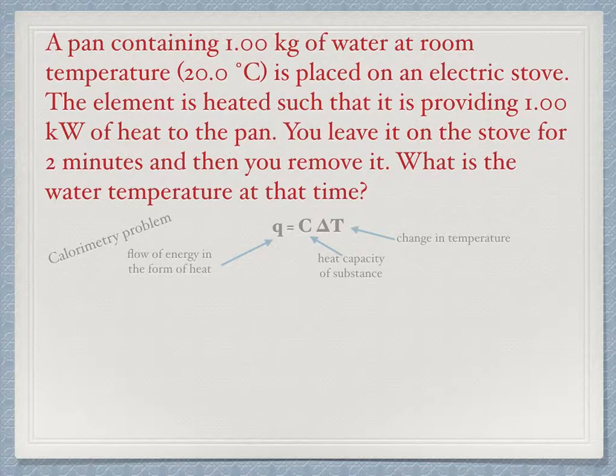Be careful to not confuse the symbol C with the unit for temperature Celsius. Celsius will always have the degree symbol in front of it. Heat capacity is an extensive property of a system. That means its value depends upon how much of the substance is present. The heat capacity is larger if we are discussing a larger amount of material.